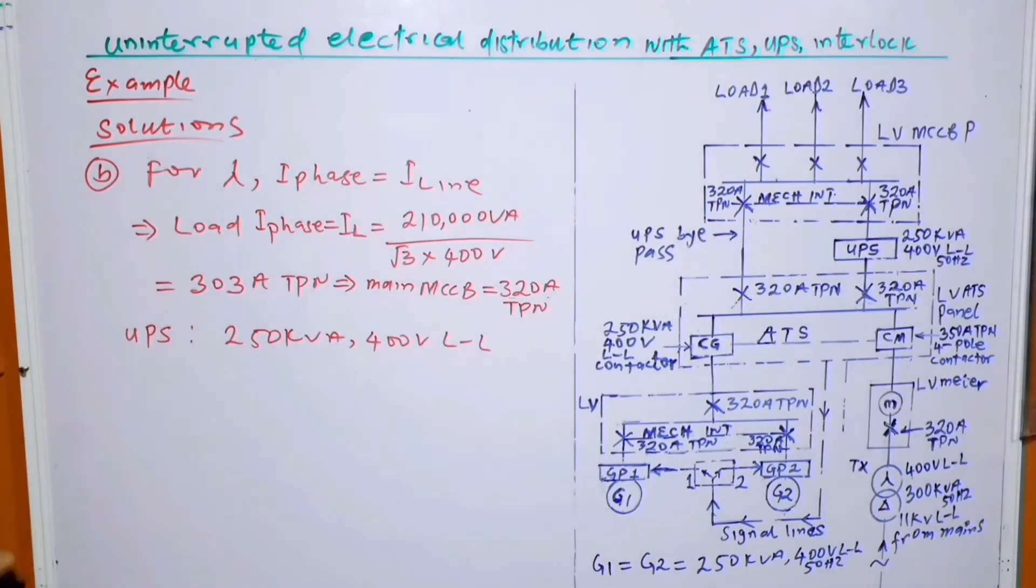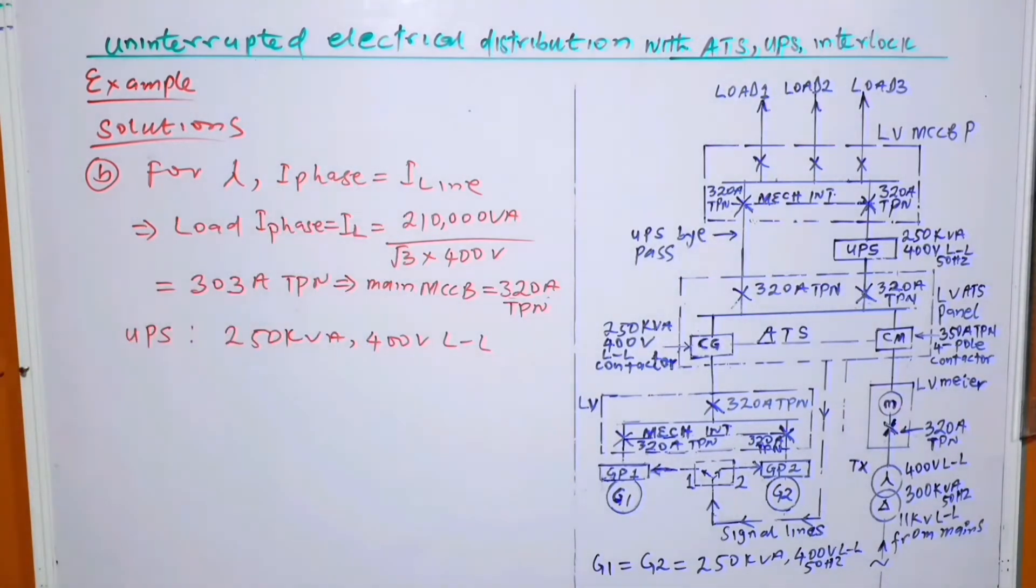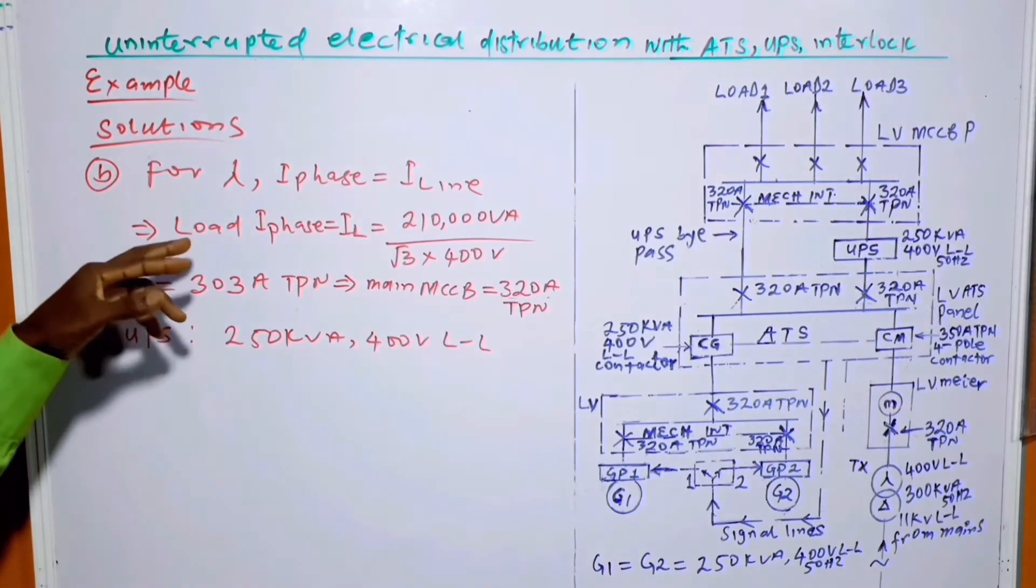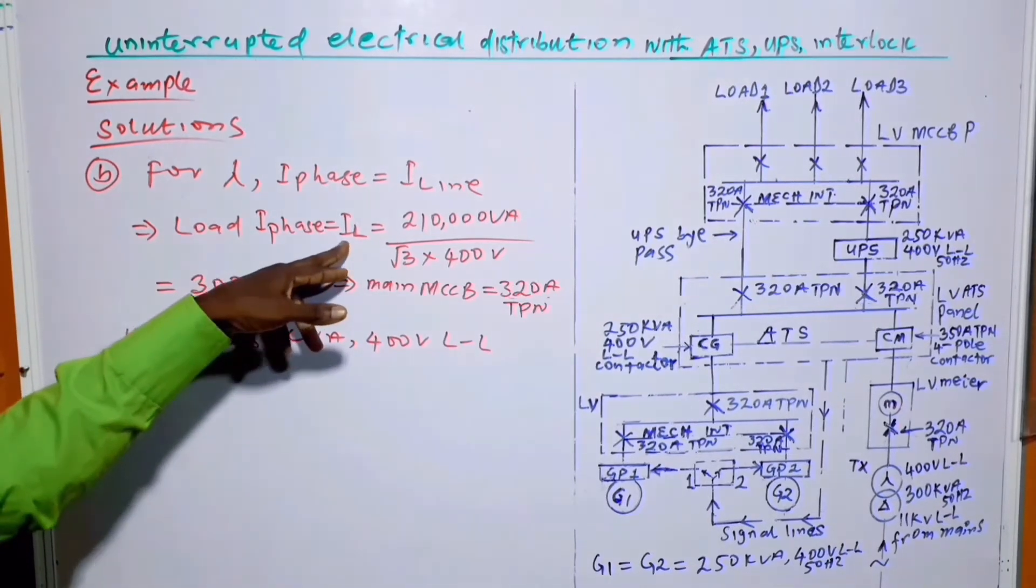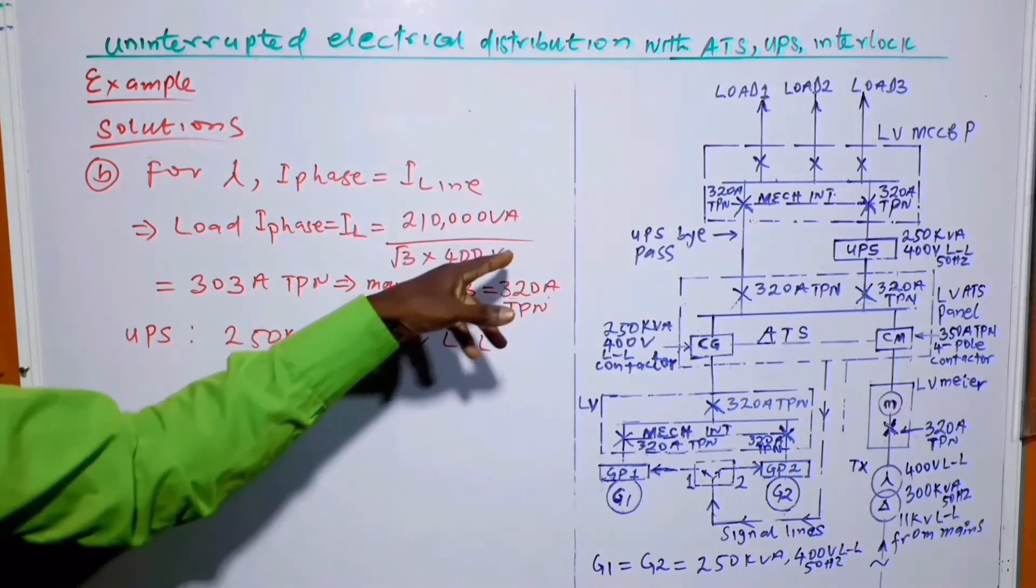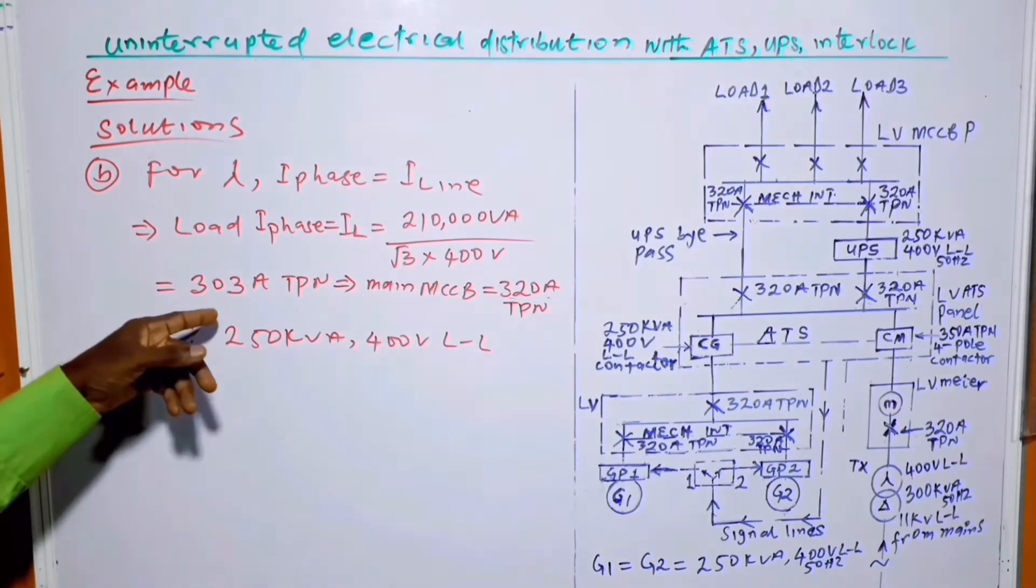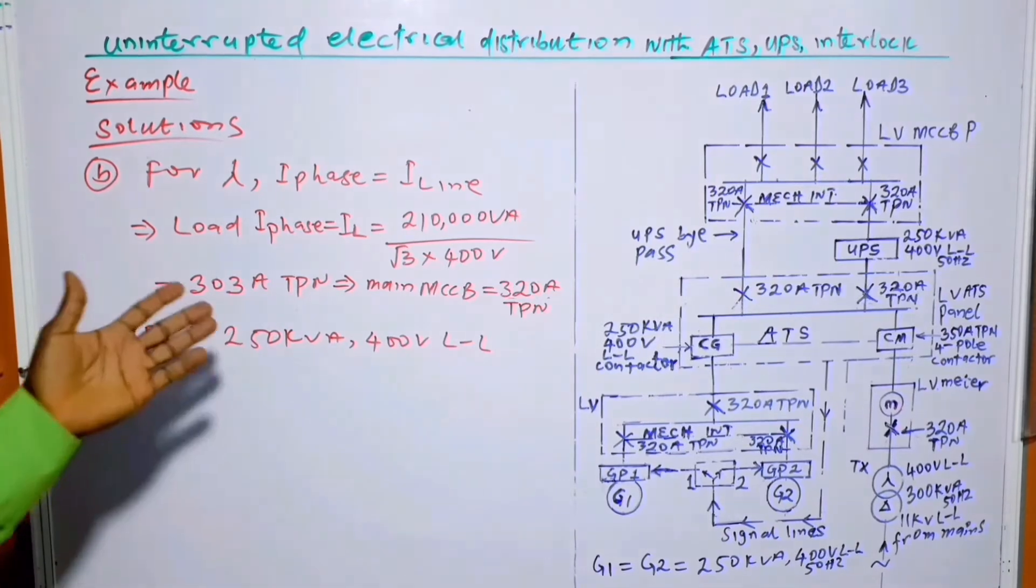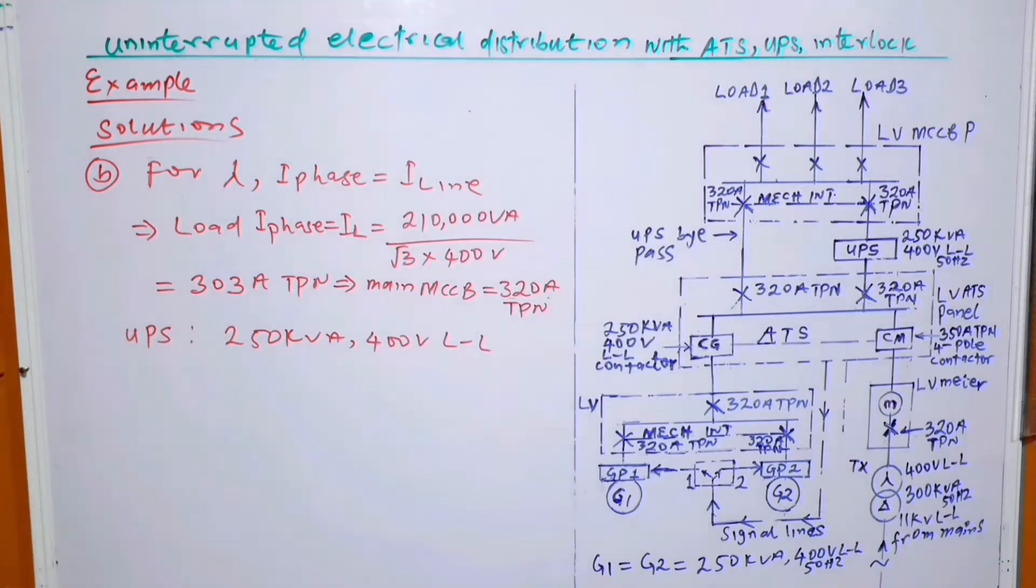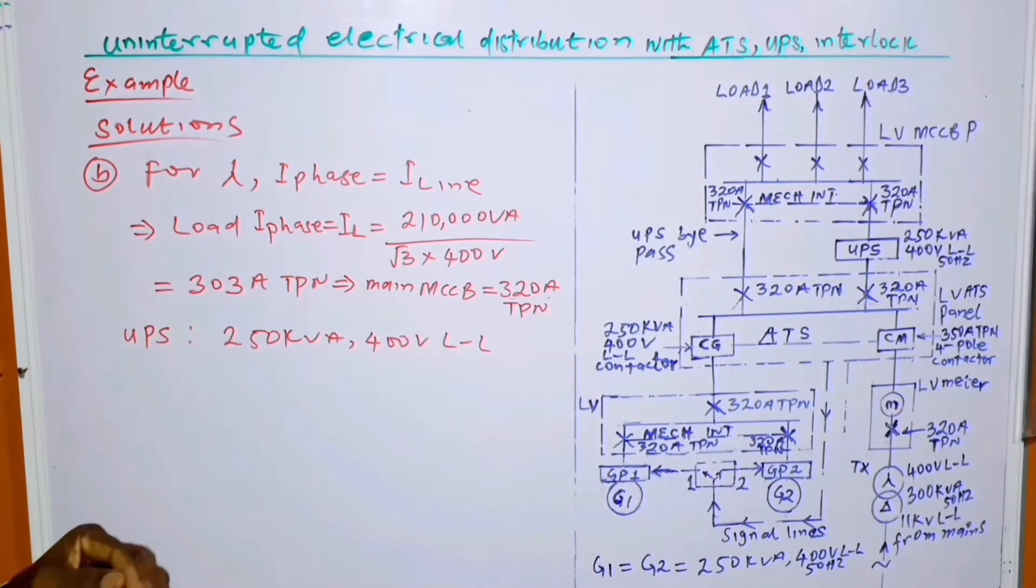Now, let's calculate the load current. For star connection, I phase equals I line. As I mentioned in one of my previous videos, the load I phase equals the load I line which is equal to 210kVA divided by root 3 times 400 volts, and that is equal to 303 ampere triple phase with neutral. It doesn't mean that the neutral current is 303. It only indicates that neutral is part of the system.